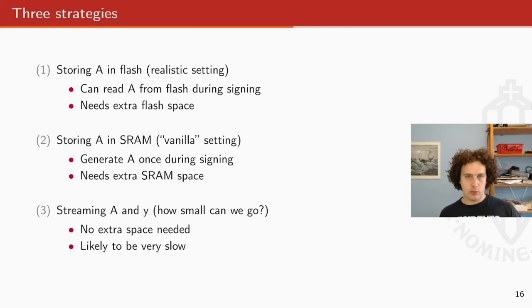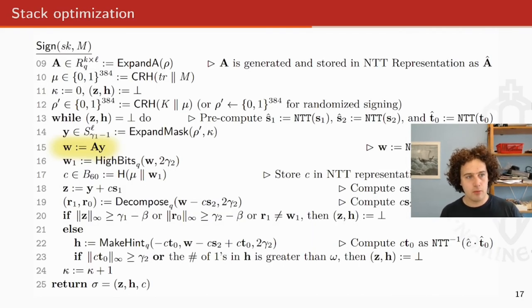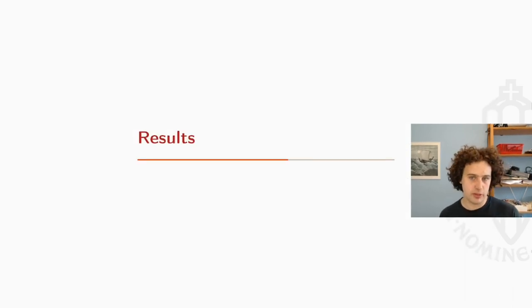Strategy two is basically the same as the Dilithium spec says. We generate A once during signing, and then we use it during a single signature. And the last one is basically we stream A and Y. It's very likely that we get a very small stack footprint, but we expect this scheme to be a lot slower. So basically the biggest bottleneck for stack optimization is this W equals A times Y. So we found that if you do mild stack optimization, then either you have to have W completely in RAM, or you would have to have Y completely in RAM. So that means that you always have either K or L kilobytes of polynomials always around. So that is kind of a lower bound that we expected if you're not going for the abysmal performance.